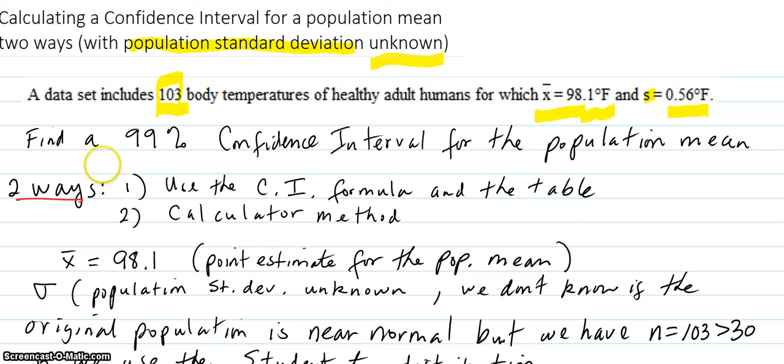The problem that we're faced with is find a 99% confidence interval for the population mean two ways. One, we're going to use the confidence interval formula and a table. Number two, we're going to use the calculator method.